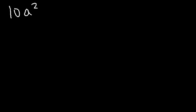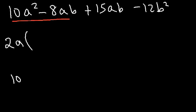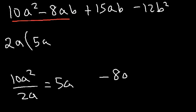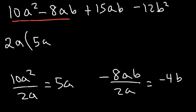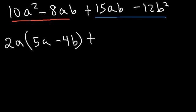Try this one: 10a squared minus 8ab plus 15ab minus 12b squared. What is the GCF in the first two terms? We can take out a 2 and an a — so 2a. 10a squared divided by 2a is 5a, and 8ab divided by 2a gives us minus 4b.